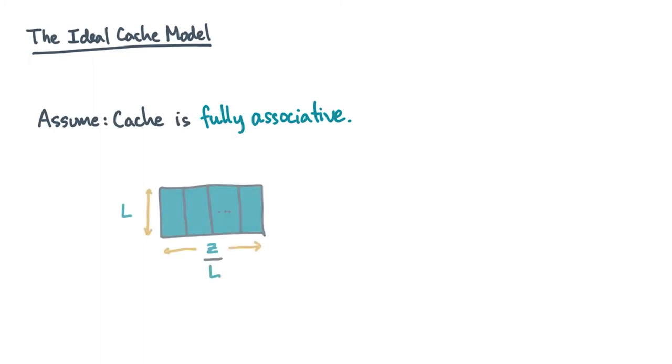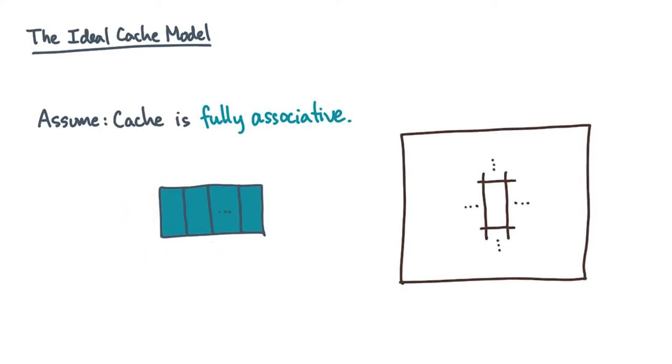Here's the next assumption in the ideal cache model. The cache is fully associative. So what does that mean? Remember that a cache consists of a set of cache lines or cache blocks. Now, suppose you load a new block from slow memory. Full associativity means that this block is allowed to go into any block or line of the cache.